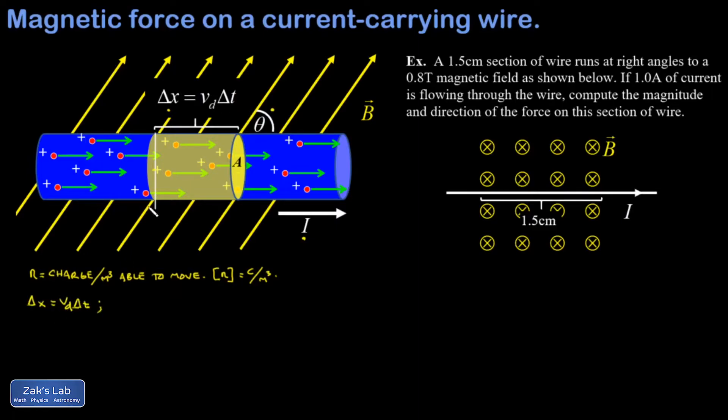The amount of charge that's passed this point of interest during that time delta T is equal to the volume of the cylinder multiplied by the density of free charge in that cylinder. I'm going to call that delta Q.